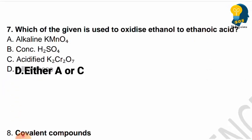Next question: Which of the given is used to oxidize ethanol to ethanoic acid? Options are alkaline potassium permanganate, concentrated sulfuric acid, acidified potassium dichromate, or either A or C. Note the correct oxidizing agent.